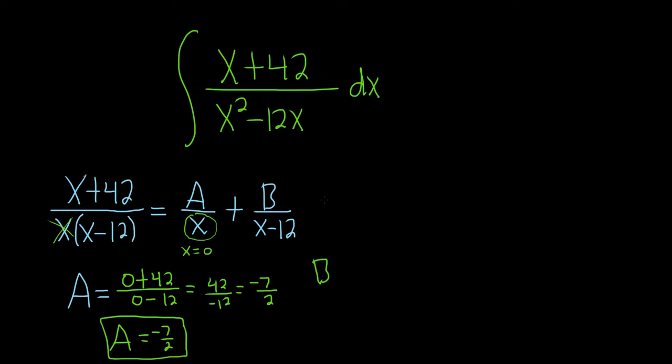To find B, as before, we look to see what is under the B. We ask ourselves, what can we plug in that will make this piece 0? So x equals 12. Then you come over here, you cover it up, and you plug in 12 everywhere else. So 12 plus 42 over 12.